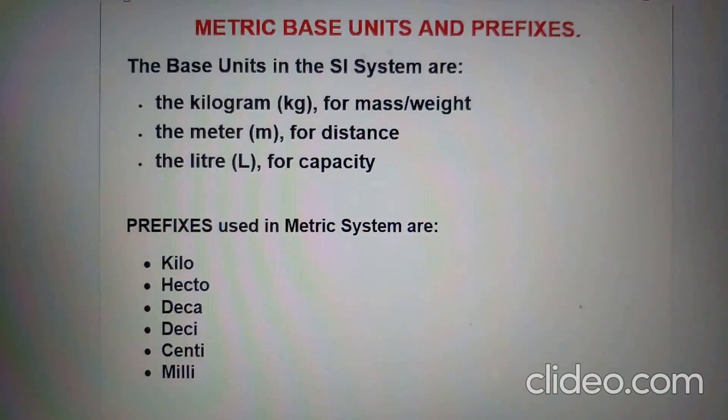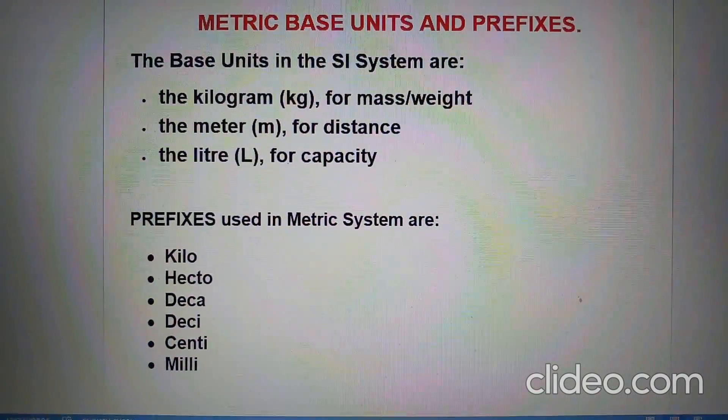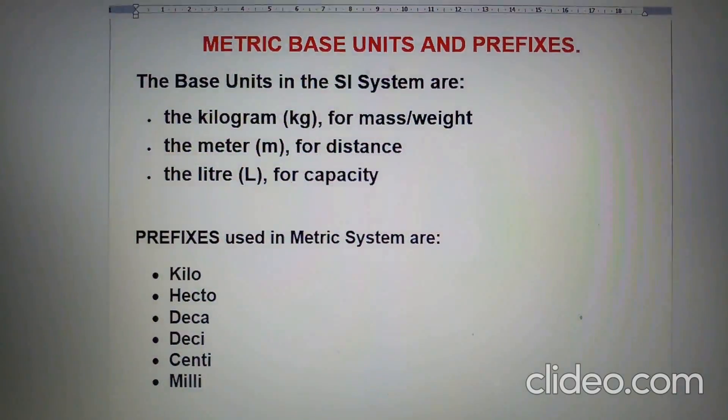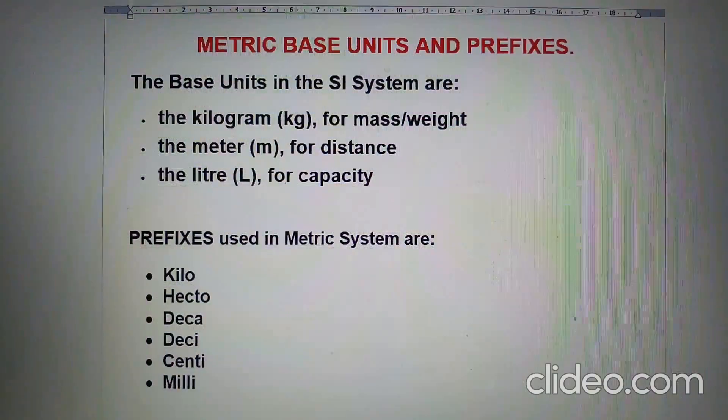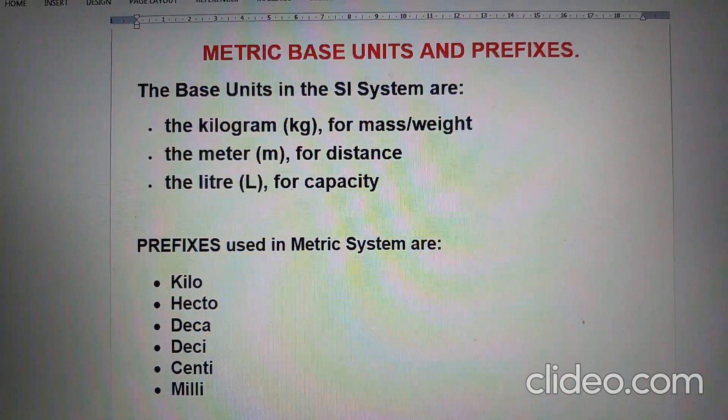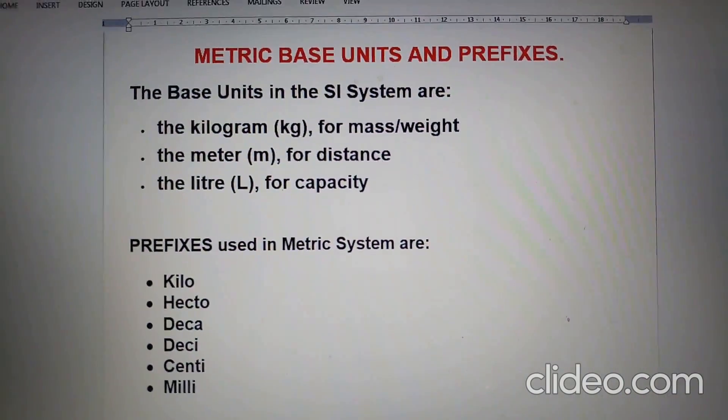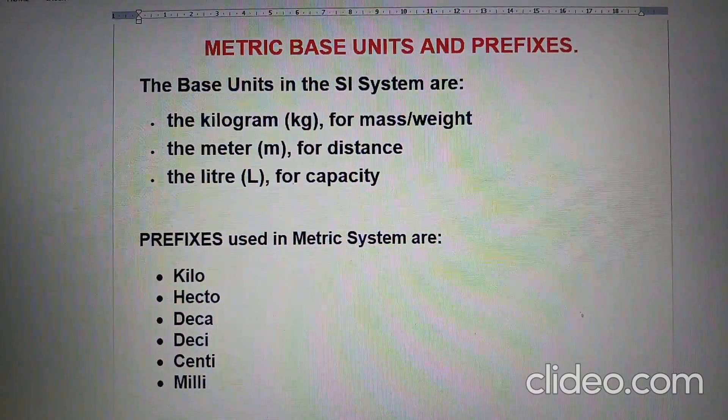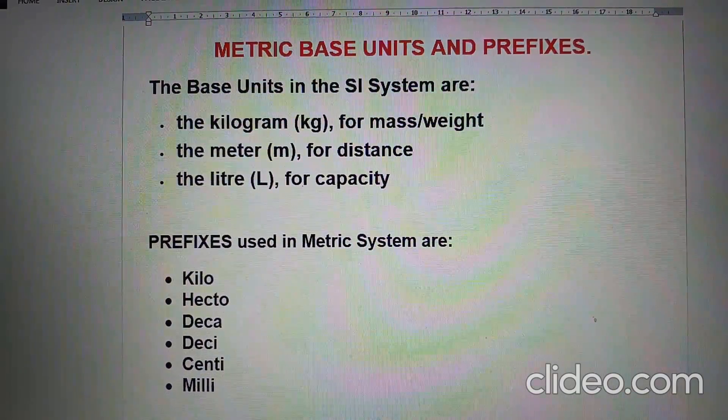The base units in the SI system are the kilogram for mass, the meter for distance, and the liter for capacity. We use prefixes like kilo, hecto, deca, deci, centi, and milli in the metric system.